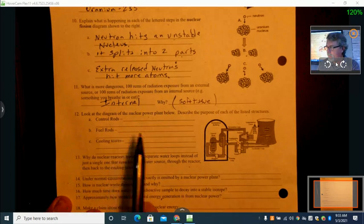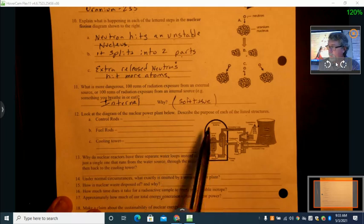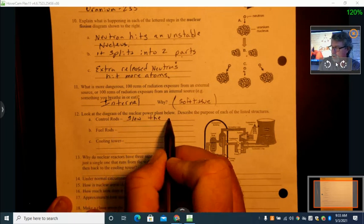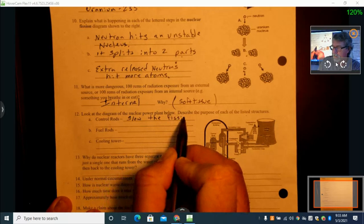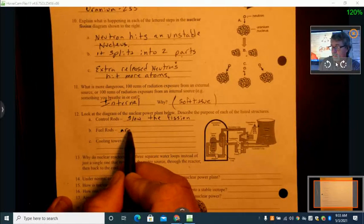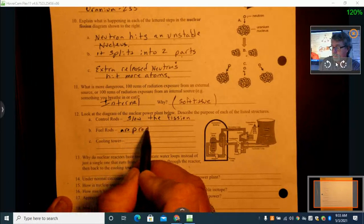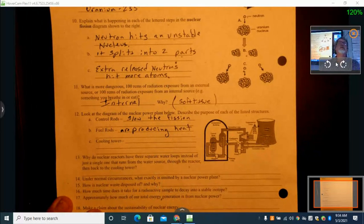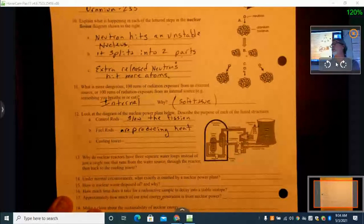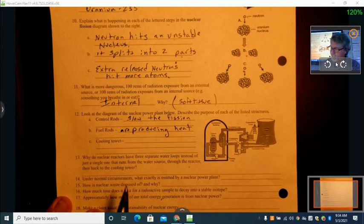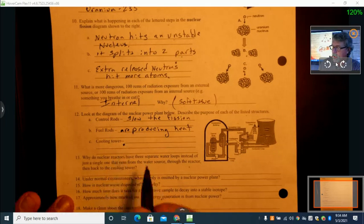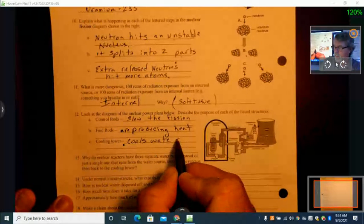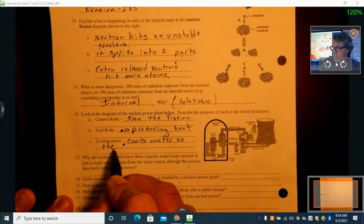The control rods, look at the diagram, describe the purpose. The control rods slow the fission in the core. The fuel rods are producing the heat. And we use that heat, don't forget, we use that heat to boil water. Water becomes steam, turns a turbine, turns a generator. And of course, we got our cooling tower, cools water so the process can repeat.